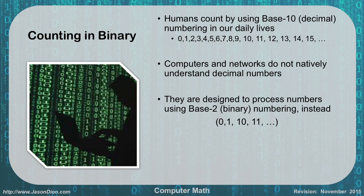When we get to 20, we'll do 20, 21, 22, et cetera. Computers and networks don't natively understand decimal numbers, though. They do everything in binary. They count by ones and zeros. Is it on or is it off? They process numbers using what we call binary or base 2 numbering.